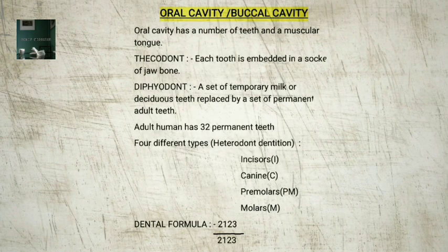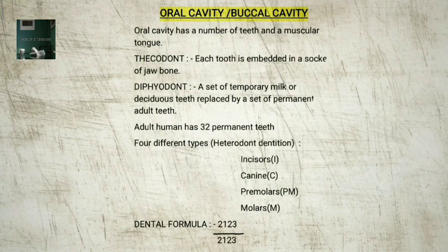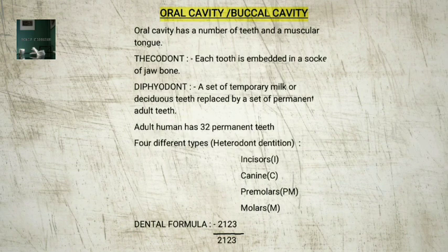The oral cavity or buccal cavity: the anterior opening, the mouth, leads to the oral cavity of the alimentary canal. The oral cavity has a number of teeth and a muscular tongue. Each tooth is embedded in a socket of the jaw bone — this type of attachment is called thecodont. In the majority of mammals including human beings, a set of temporary milk or deciduous teeth are replaced by a set of permanent or adult teeth — this type of dentition is called diphyodont. An adult human has 32 permanent teeth which are of four different types: incisors, canine, premolars, and molars. This type of dentition is called heterodont.